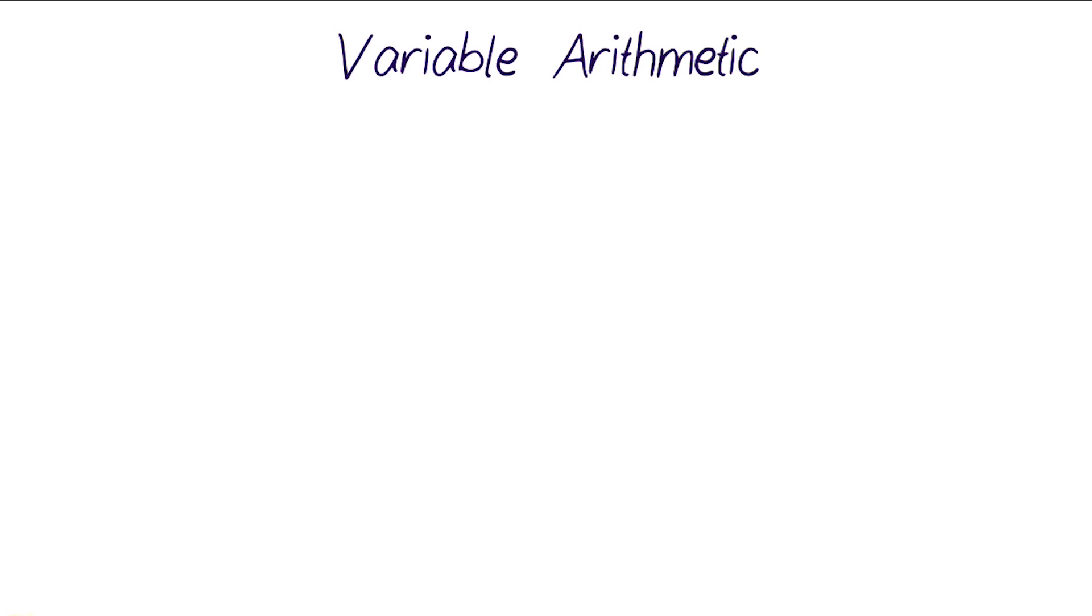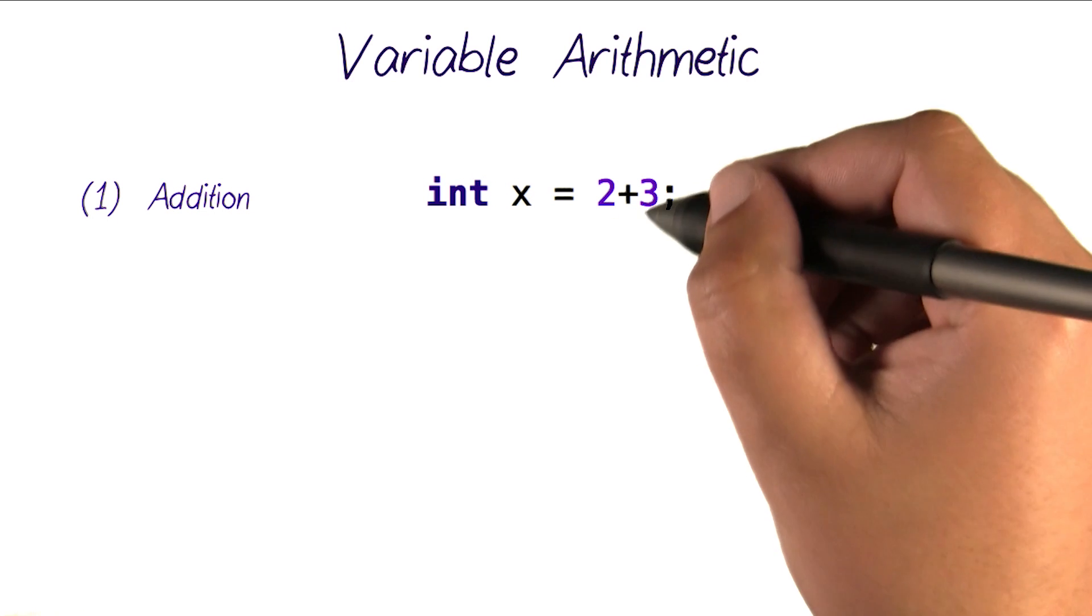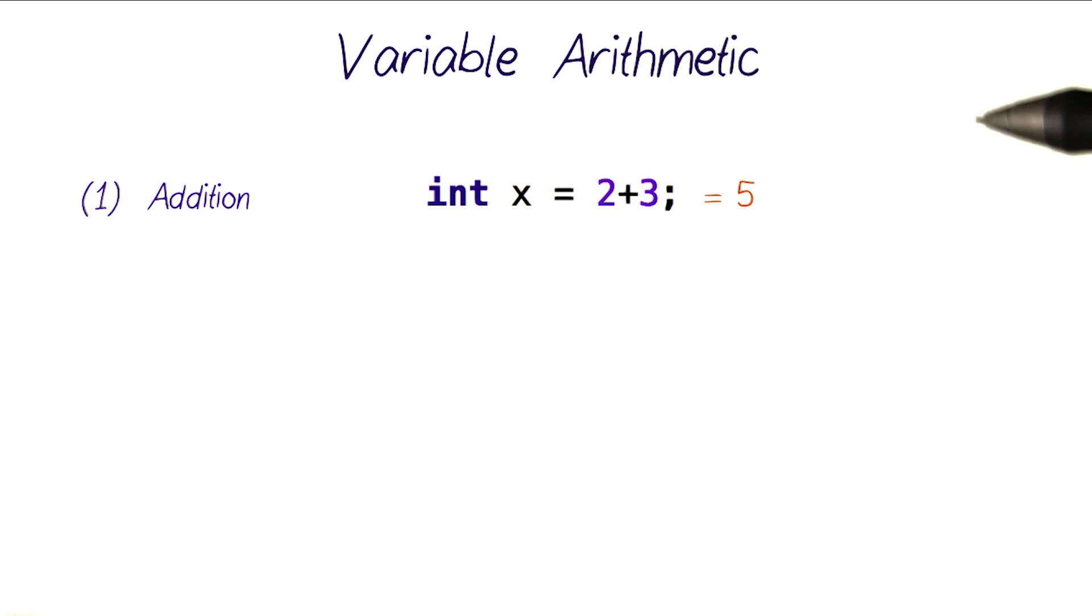In our bus example earlier, we've learned how to do some basic arithmetic operations, like using the plus sign to add two numbers together. For example, if we had this statement, integer x equals 2 plus 3, that would do this calculation and calculate 5 and then store 5 into our variable x.